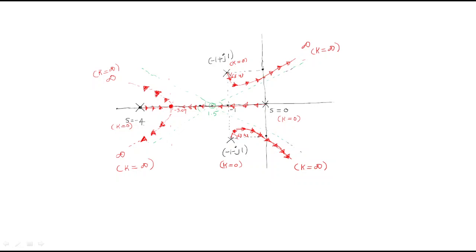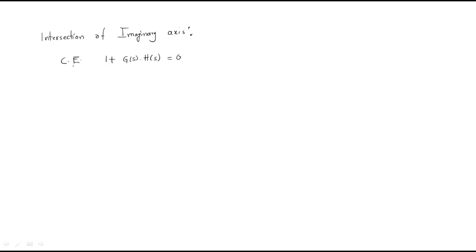We now find the intersection of the root locus with the imaginary axis using the Routh-Hurwitz criterion. First, write the characteristic equation: 1 plus G(s)H(s) equals zero, which gives s^4 plus 6s^3 plus 10s^2 plus 8s plus K equals zero. We form the Routh array with rows for s^4, s^3, s^2, s^1, and s^0.